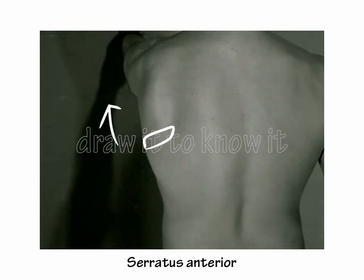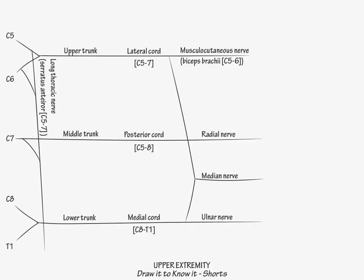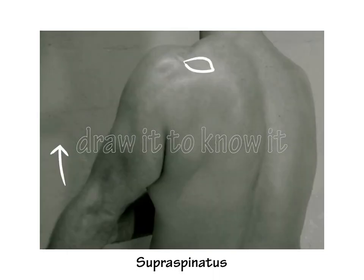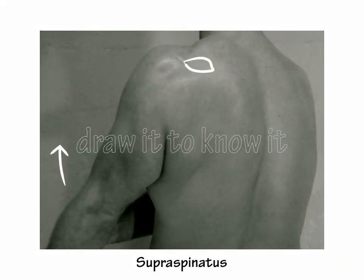Next show that the suprascapular nerve originates from the upper trunk, and indicate that one of the major muscles it innervates is the supraspinatus muscle, C5-C6, which is responsible for the first 20 to 30 degrees of arm abduction.